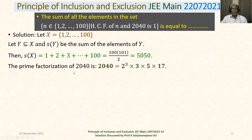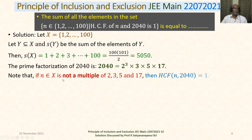The prime factorization of 2040 is 2³ × 3 × 5 × 17. Note that if n belongs to X and n is not a multiple of 2, 3, 5, or 17, then the HCF of n and 2040 is 1.